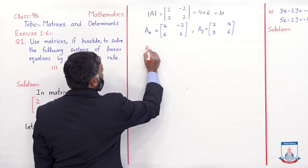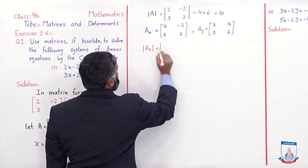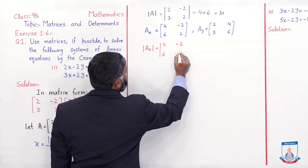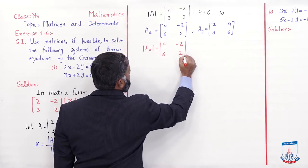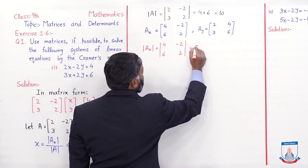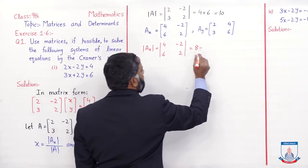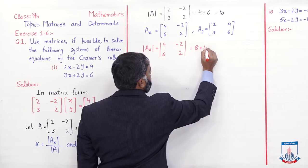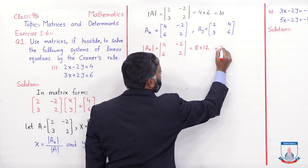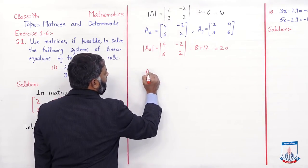Ab in dono matrices ka determinant find karke formulas mein values put kar denge. Det(Ax) find karenge: matrix [4, -2; 6, 2]. Diagonal entries ko multiply karein — 4 × 2 = 8. Minus non-diagonal entries: minus 2 × 6 = minus 12, toh yeh plus 12 aayega. 8 + 12 = 20. Ab det(Ay) find karenge.